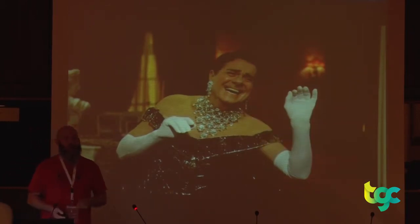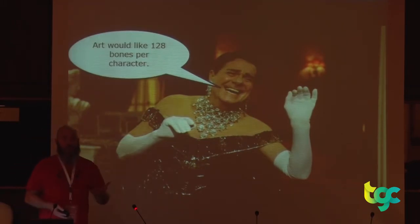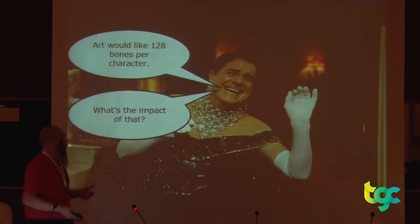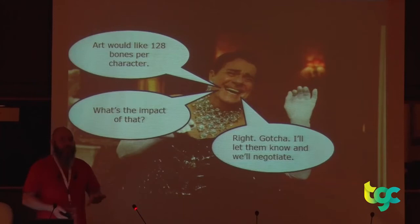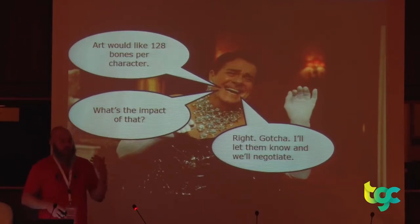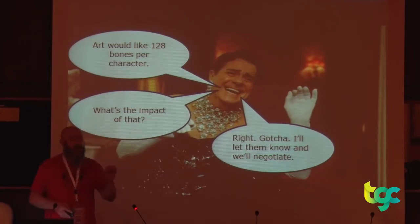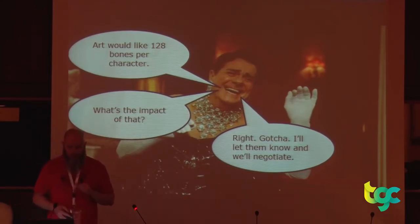That's not what a producer should be saying — just 'make it happen at 30.' They should be saying: art wants 128 bones per character, up from 64 — what's the impact of that? I understand, I'll let them know, we'll negotiate, we'll figure out how we can do this, we'll work together. Producers are not your enemies. They are a very valuable resource, and a good producer makes a massive difference to a product.